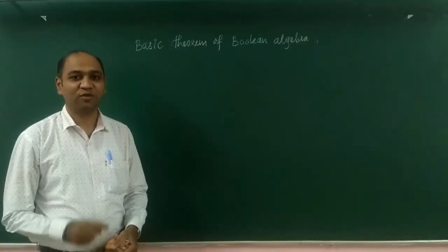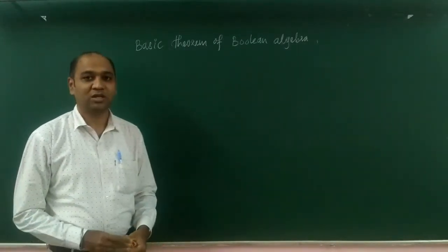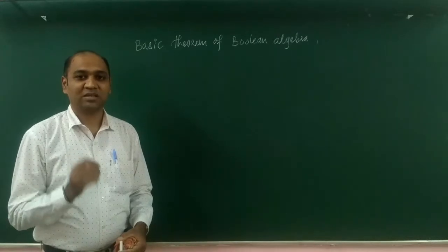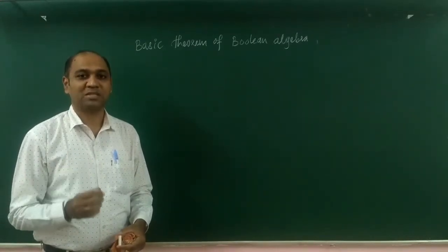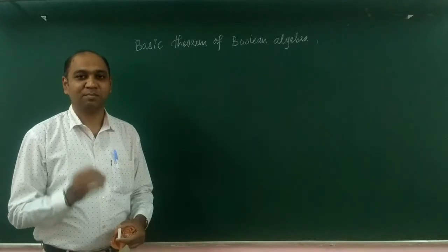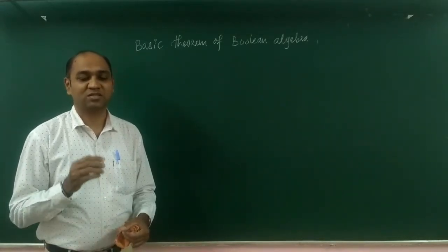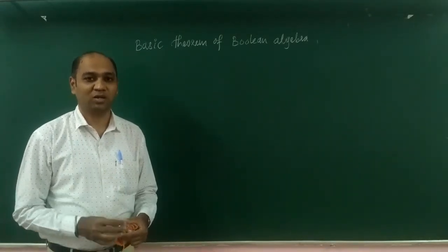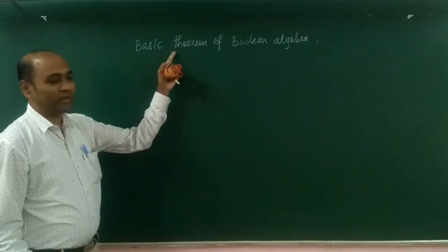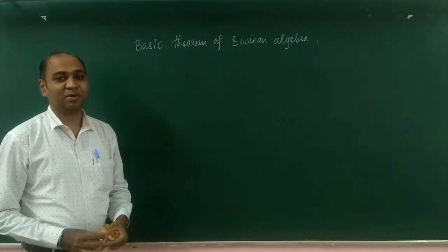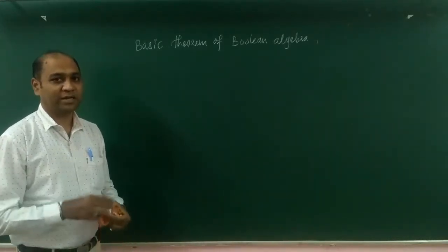Hello my dear students. In this video we are going to study basic theorems of boolean algebra. Basic theorems of boolean algebra can be proved by substituting the maximum possible values of the variables, that is 0 and 1. This method of proving the theorems of boolean algebra is what is called proof by perfect induction.